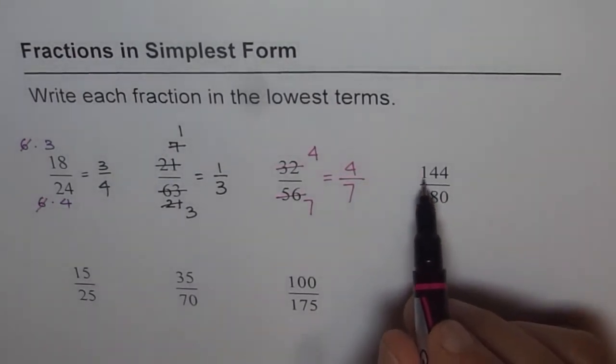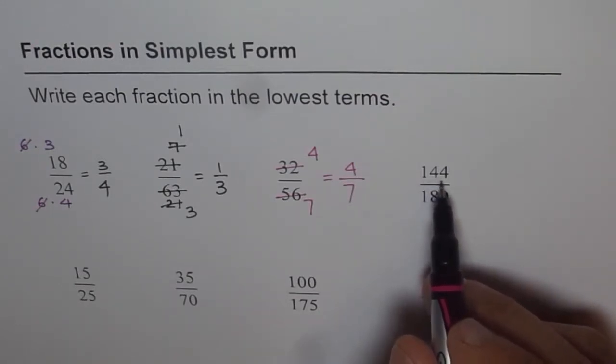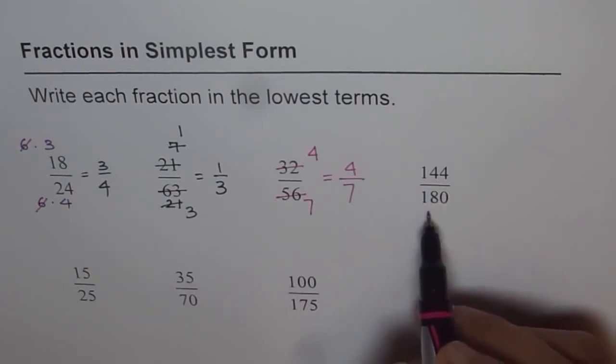Now here, 144 divided by 180. Now 144 you know is 12 times 12 is 144. Now is 180 divisible by 12? That is the question.